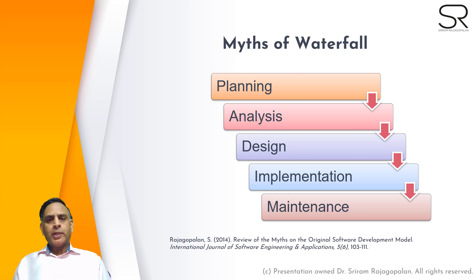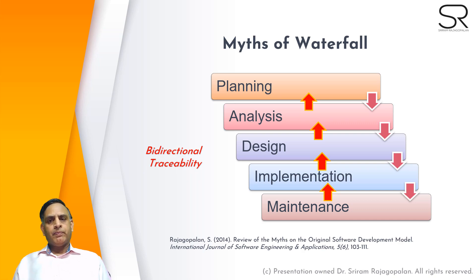Actually, Winston Royce promoted about 20 different small incremental diagrams through which he started developing the framework for software development. The waterfall diagram was the second in a series of 20 diagrams spread over 15 to 16 pages. We stopped at this second diagram and said we are going to follow this model. In subsequent diagrams, Winston Royce himself explained why this would not work and promoted different approaches — including bi-directional traceability, where every stage gives feedback to the previous stage and we go in cycles. Some of you can relate this to the Plan-Do-Study-Act cycle from Deming.